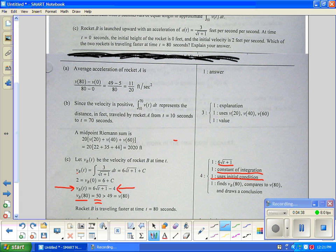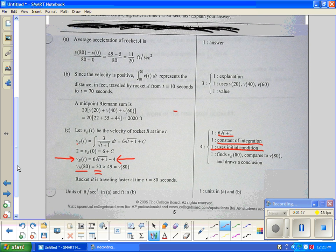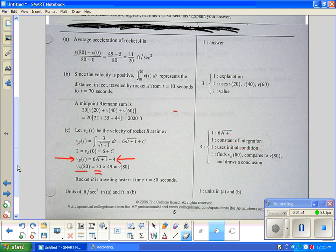Well guess what? 50 is greater than 49. So rocket B is traveling faster at time 80 because 50 is greater than 49. That's a point too. And you gotta draw a conclusion. You gotta show a comparison to get that point.